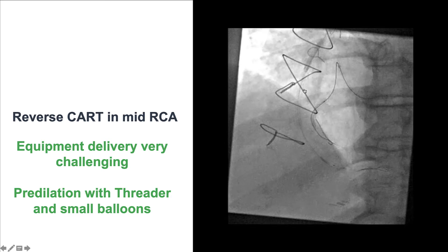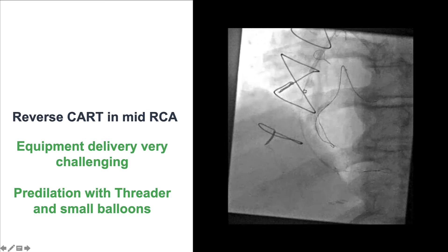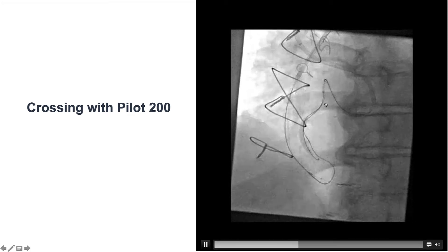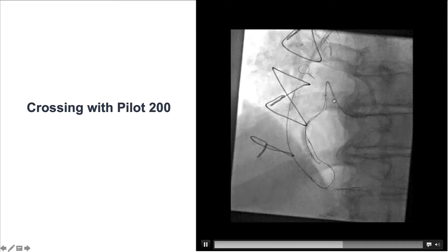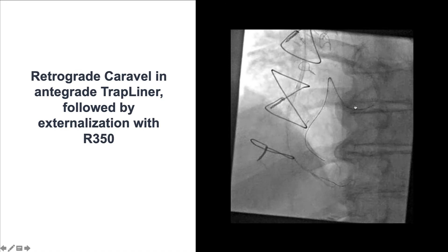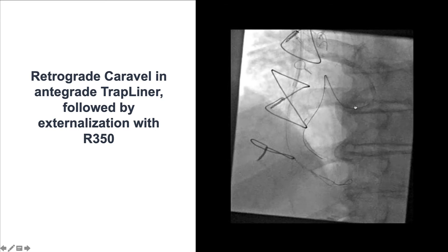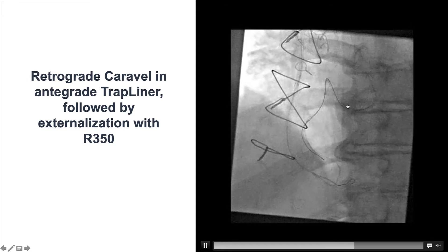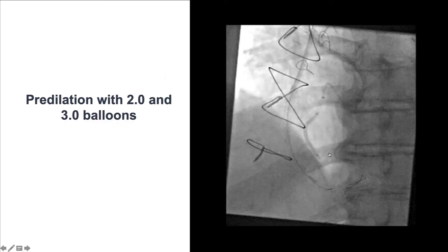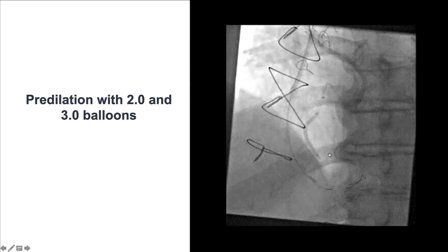Eventually we performed the reverse CART technique in the mid-right coronary artery. Getting equipment there was extremely challenging, requiring predilatation with multiple small balloons. Using an antegrade guide extension, we were able to advance a retrograde Pilot 200 guide wire into the antegrade guide extension. The Caraval was then inserted, and an R350 guide wire was successfully externalized. This proved critical for the success of the case, as support was very challenging through this highly tortuous and calcified RCA — without an externalized guide wire, we might not have been able to deliver equipment and stent the lesion.